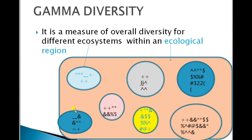The unique species present in all these ecosystems belonging to a large ecological region is known as gamma diversity. So to summarize: alpha relates to species in a smaller area, beta compares two adjacent ecosystems, and gamma includes the entire ecological region.